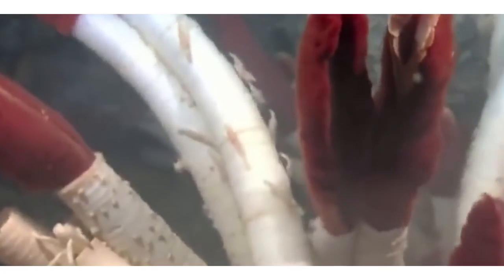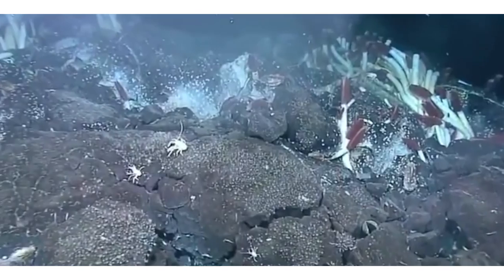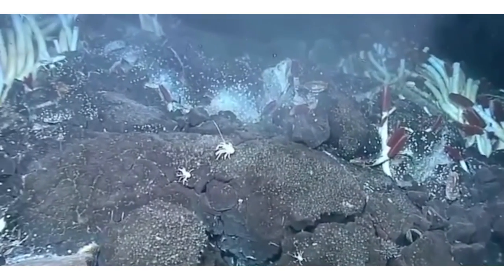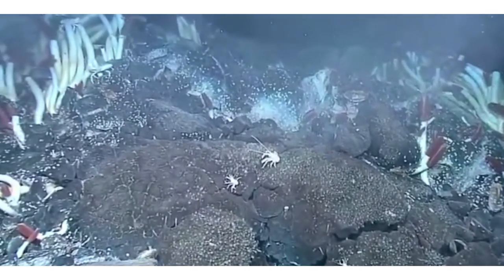The worm's blood picks up and delivers sulfide, carbon dioxide, nitrate, and oxygen to these bacterial symbionts, which in turn feed the host with excess sugars.